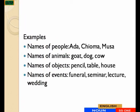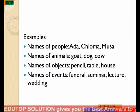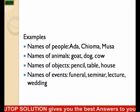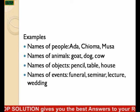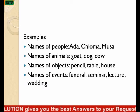Examples of nouns. We have examples of names of people: Hada, Chioma, Musa. Names of animals: goat, dog, cow. Names of objects: table, house.